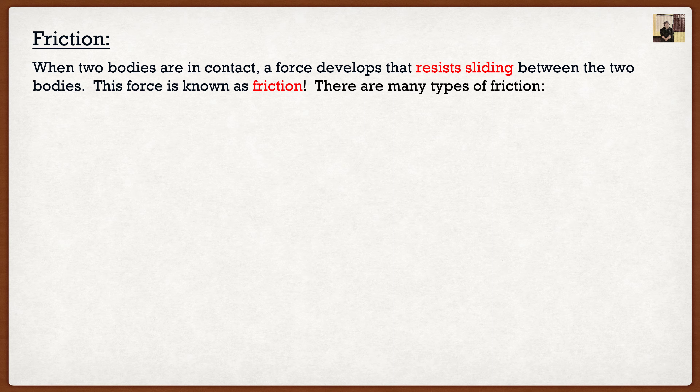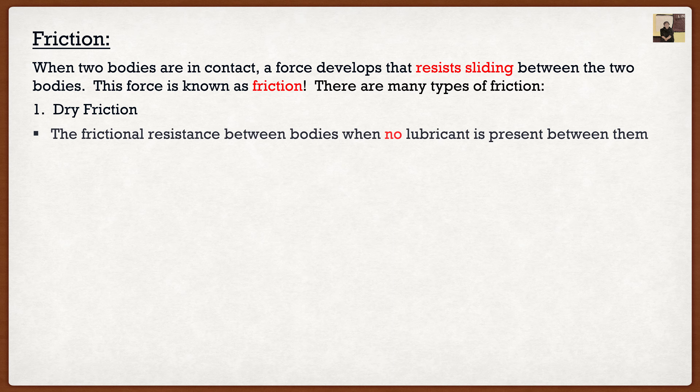Now, there are actually many types of friction, but we're going to cover the three most basic. And then for the rest of the course, we're going to focus on one type of friction. The first one is dry friction — this is when a frictional resistance between two bodies develops when no lubricant is present.